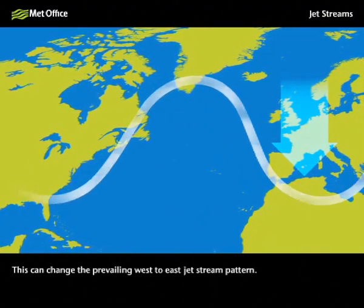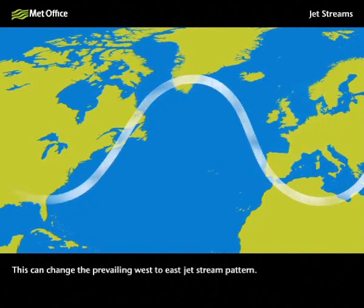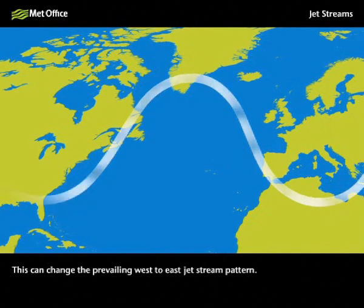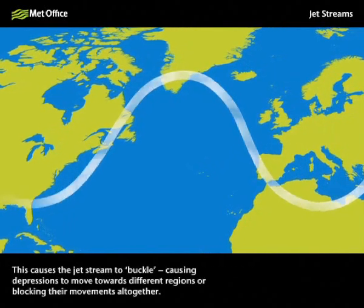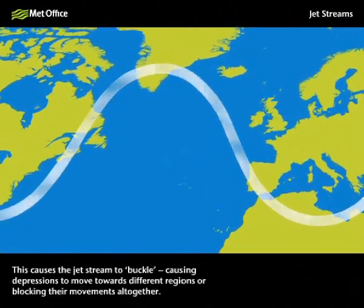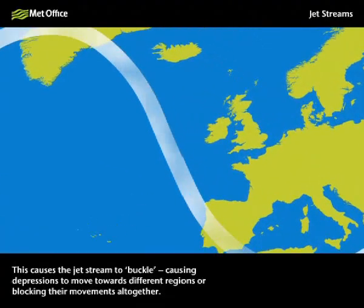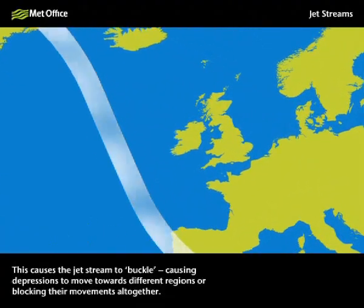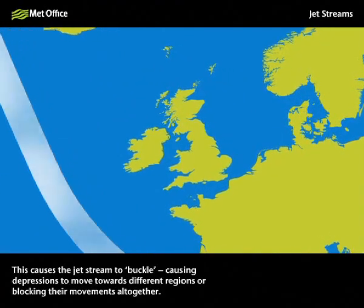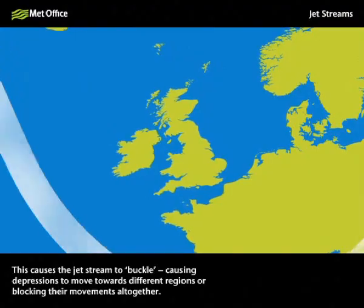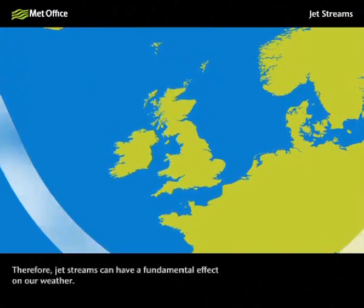This can change the prevailing west to east jet stream pattern. This causes the jet stream to buckle, causing depressions to move towards different regions or blocking their movements altogether. Therefore jet streams can have a fundamental effect on our weather.